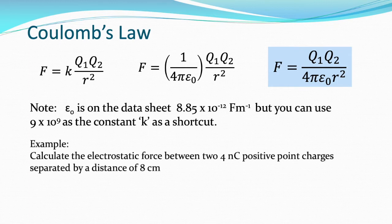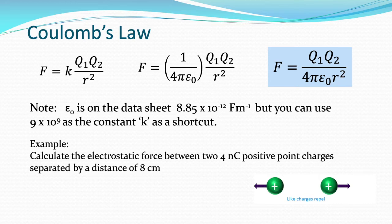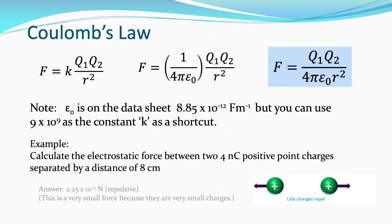For example, if you were asked to work out the electrostatic force between two 4 nC positive charges separated by 8 cm: F equals K Q1 Q2 over R squared. K is 9 times 10 to the 9. Q1 and Q2 are both 4 times 10 to the minus 9, and R is 0.08 metres squared. Doing that on your calculator gives 2.25 times 10 to the minus 5 N. It's a repulsive force because both charges are positive, and it's a very small force because they are very small charges.